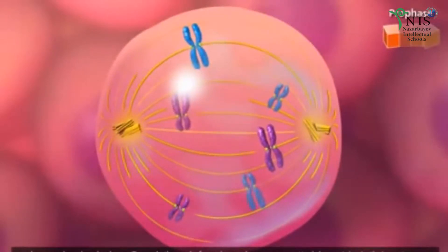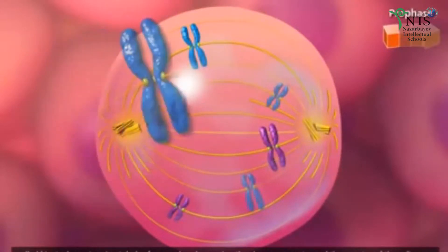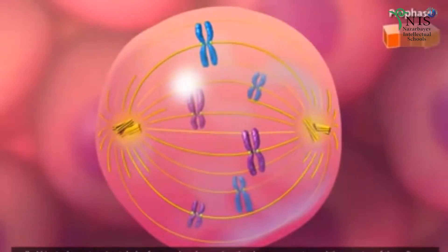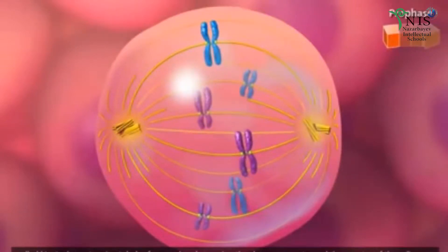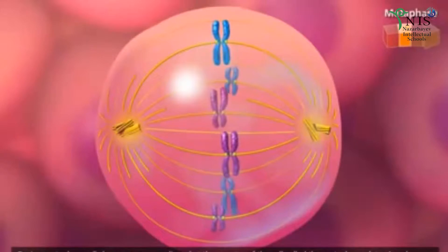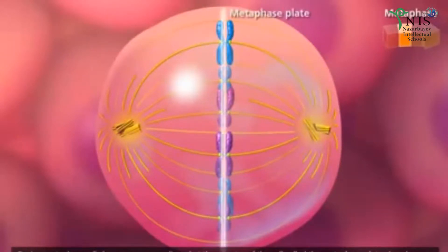Towards the end of prophase, chromosomes attach by proteins in their centromeres called kinetochores to microtubules from each pole, moving the chromosomes toward the equator of the cell. During metaphase, all chromosomes are aligned at the equator of the cell, called the metaphase plate.